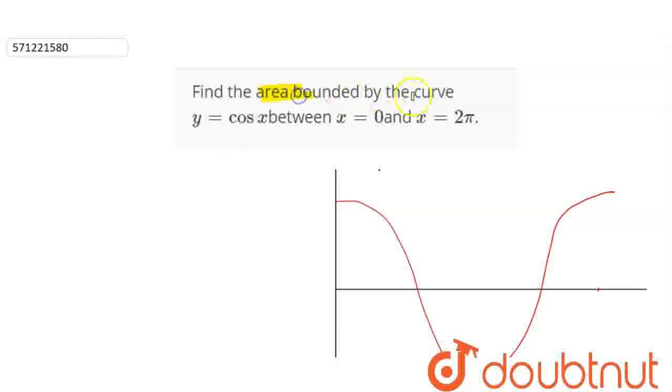The question is to find the area bounded by the curve y equals cos x between x equals 0 and x equals 2π.